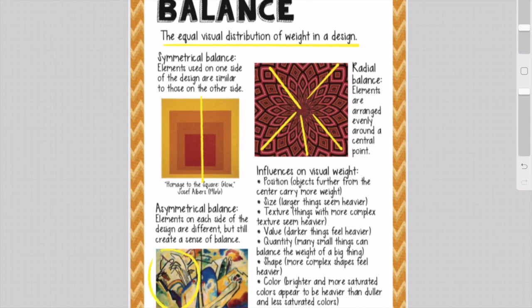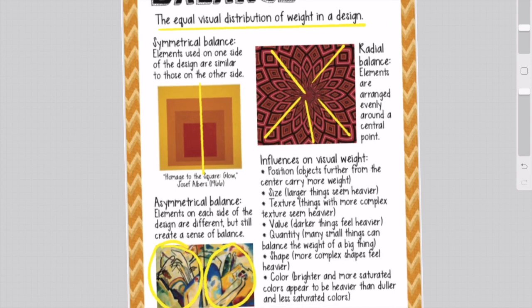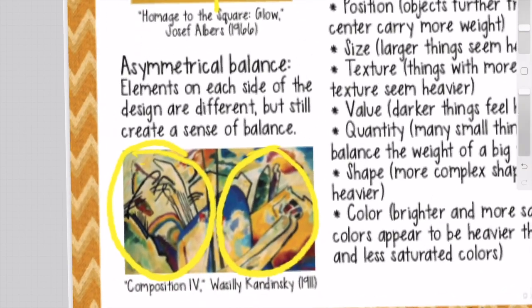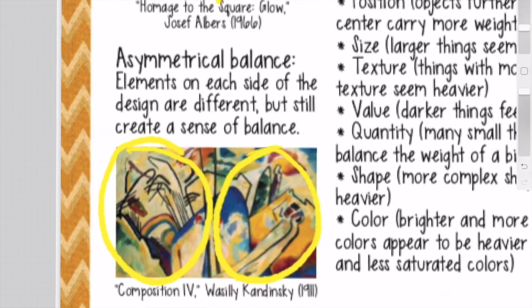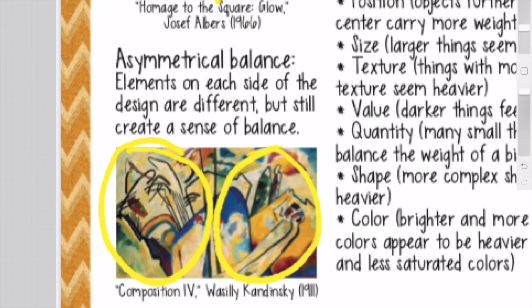If you look at this painting in the lower left, you can see that these objects are completely different from one another and yet they seem to have the same visual weight. That's called asymmetrical balance.